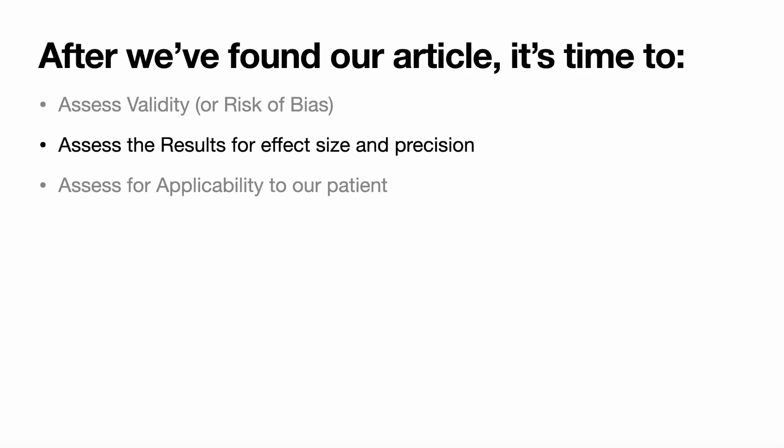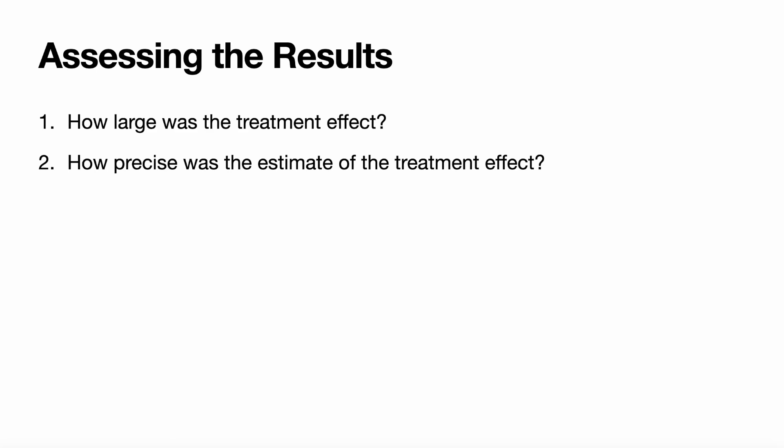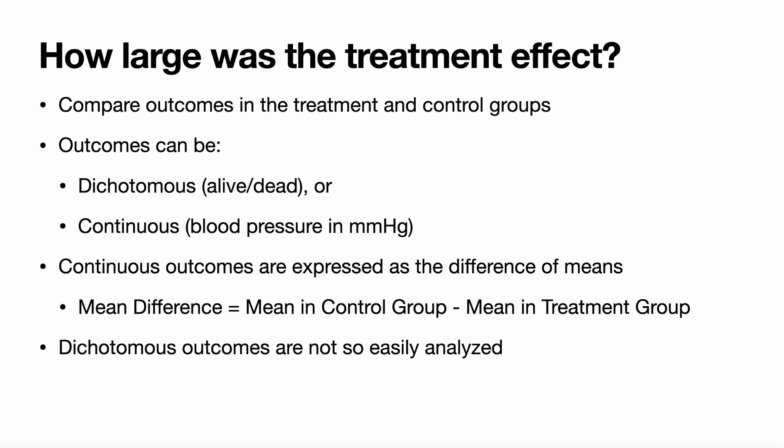After finding our article, it is time to assess the results for effect size and precision. We want to know: how large was the treatment effect, and how precise was the estimate? Outcomes can either be dichotomous — yes or no, alive or dead, pregnant or not pregnant — or continuous, which are continually measured, such as blood pressure in millimeters of mercury, age, or weight. In this article, the primary outcome was six-minute walk distance at a three-month follow-up, and distance is a continuous outcome.